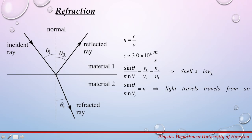Snell's law is the equation that explains this phenomenon. This equation relates the incident wave and refracted wave to the index of refraction for the two materials. In our case, sin θi divided by sin θr is going to be equal to the velocity of light in medium 1 divided by the velocity of light in medium 2, and that equals n2 over n1.